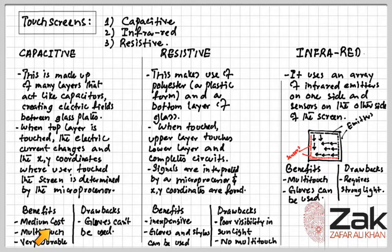The benefits of capacitive screens are medium cost technology. Screen visibility is good even in strong sunlight, and it permits multi-touch ability. The screen is very durable — it takes a major impact to break the glass. Nowadays, the most used system is capacitive touch screens.